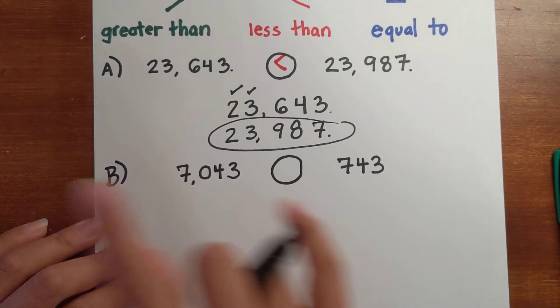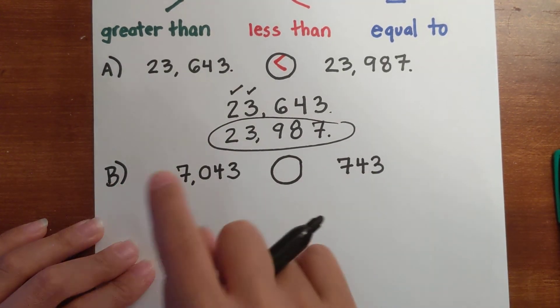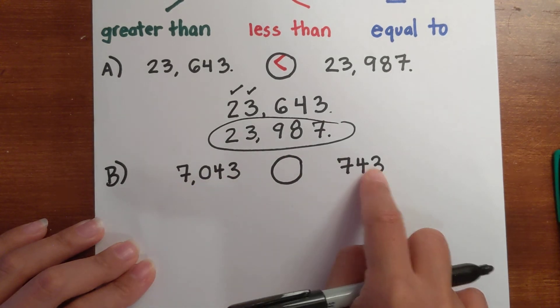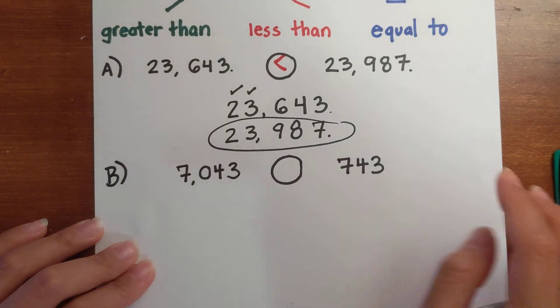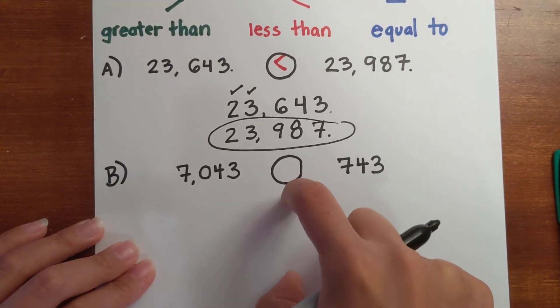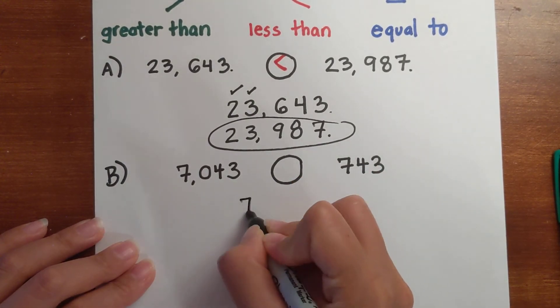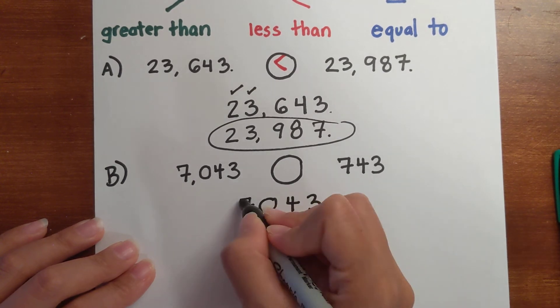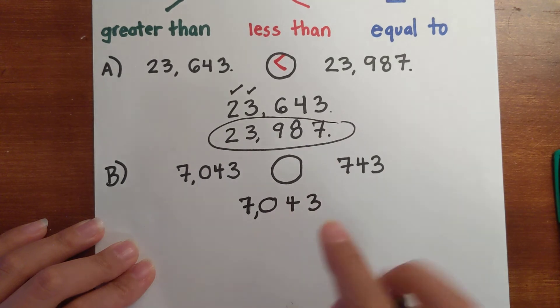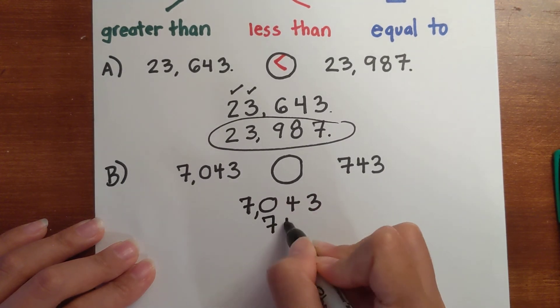Now you're comparing these two values, and you might look at this and automatically say, 'Hey, thousands is greater than a value with no thousands, that's automatically going to be greater.' That's fine, but I want you to still practice lining up your values to compare value by value. So we have 7,043, you're comparing that to 743.